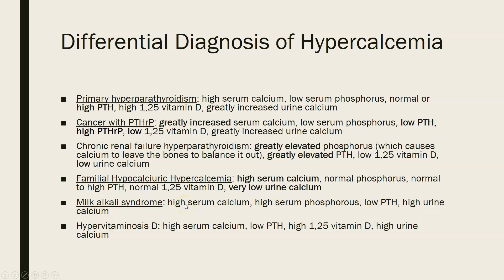In hypervitaminosis D — usually from supplement overdose — there is high serum calcium, low PTH, high 1,25-hydroxyvitamin D (obviously, due to the excess vitamin D), and high urine calcium due to the elevated serum calcium. PTH is low because calcium is already high and there is no need to raise it further. That concludes this video — thank you very much.